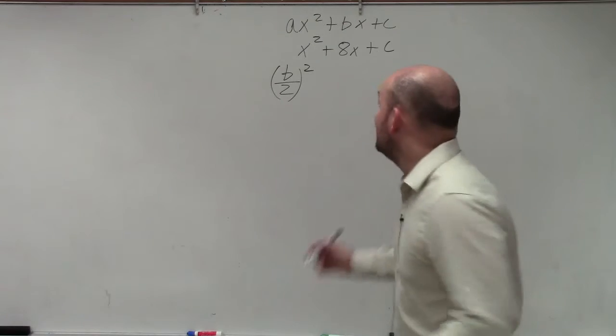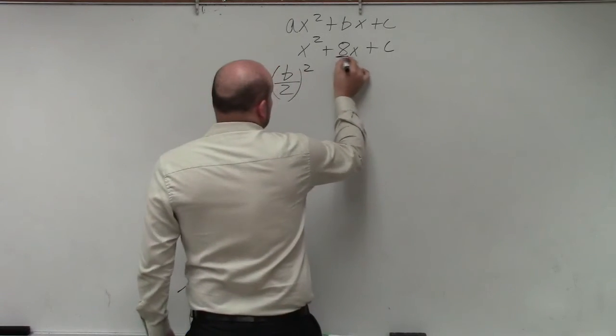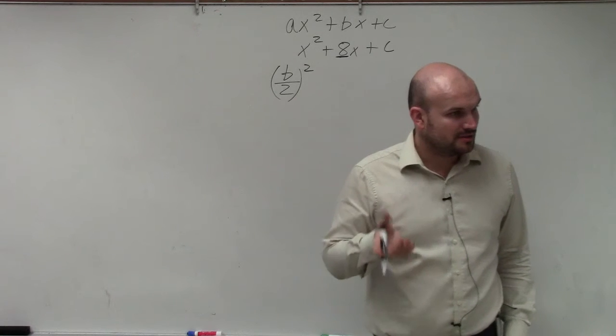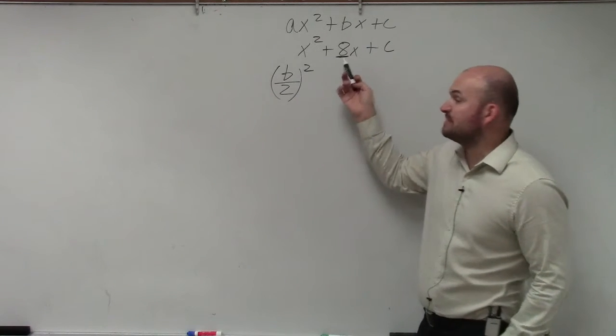So the value of b is actually the value of your middle term, or your linear term, the coefficient of your linear term, the term that's being multiplied by your x.